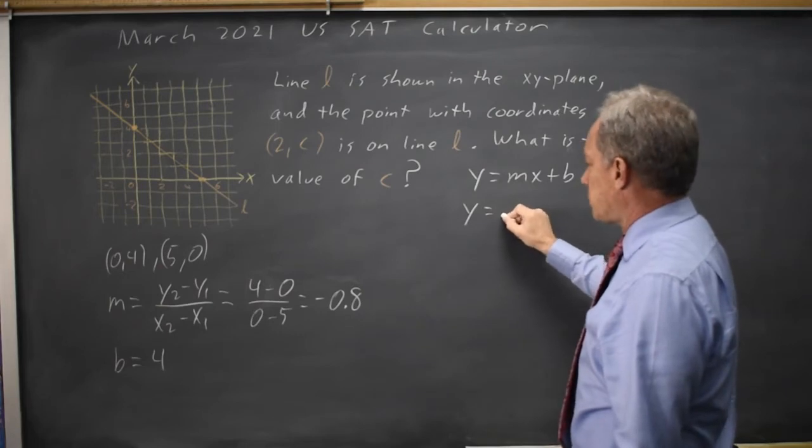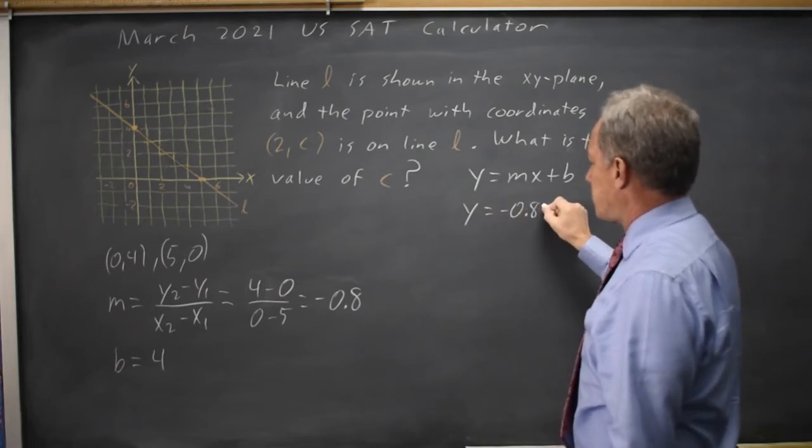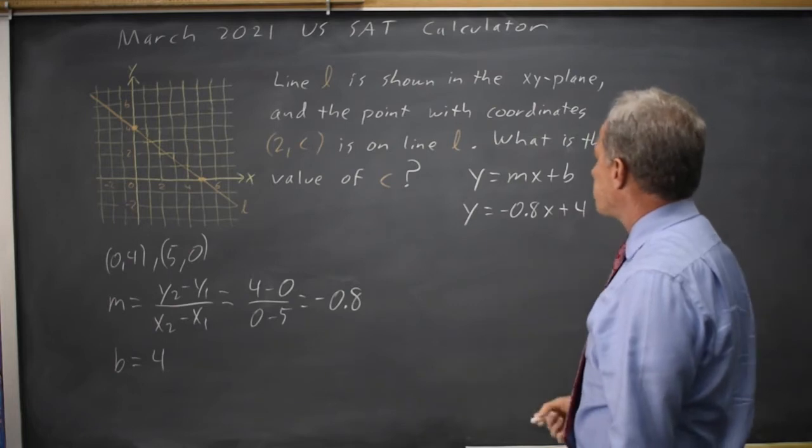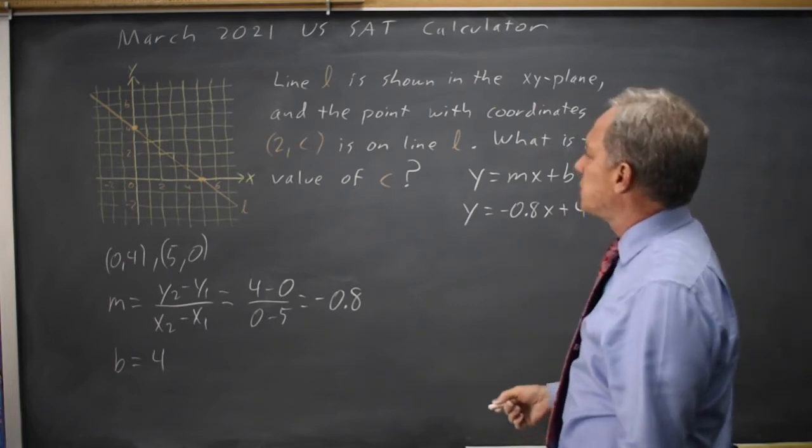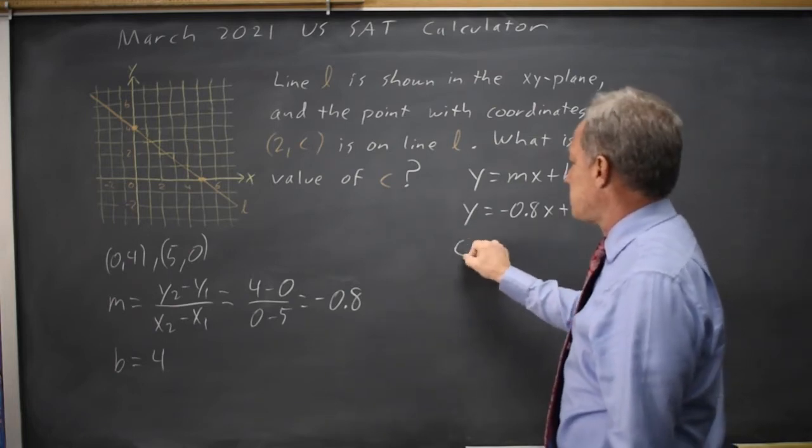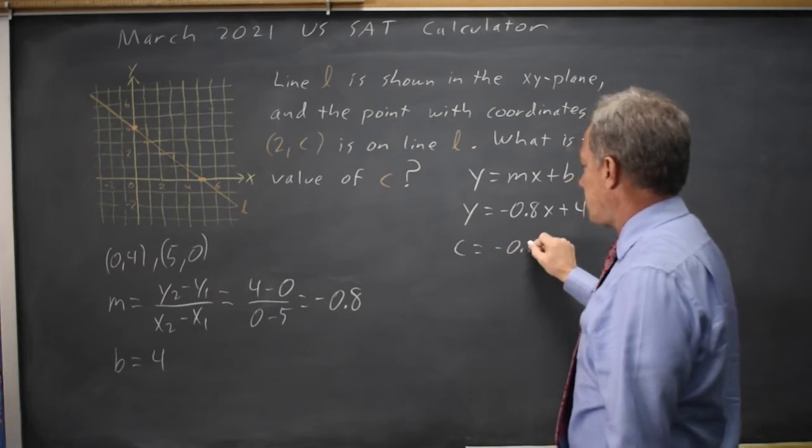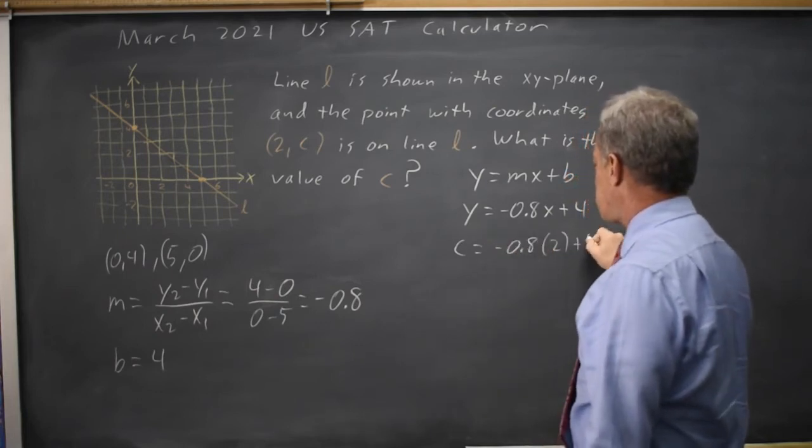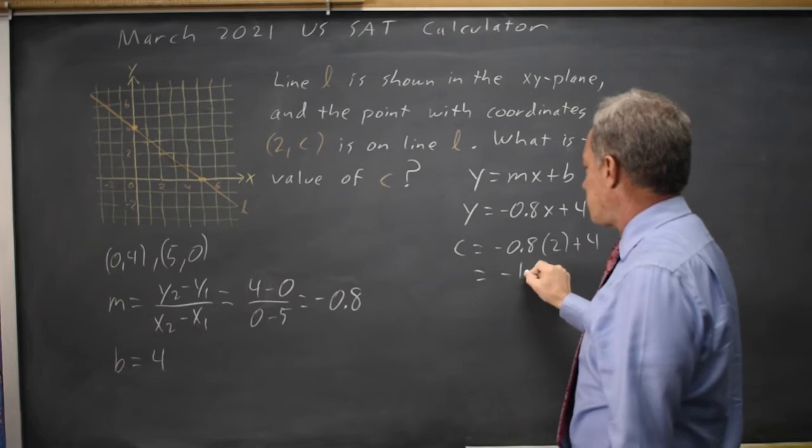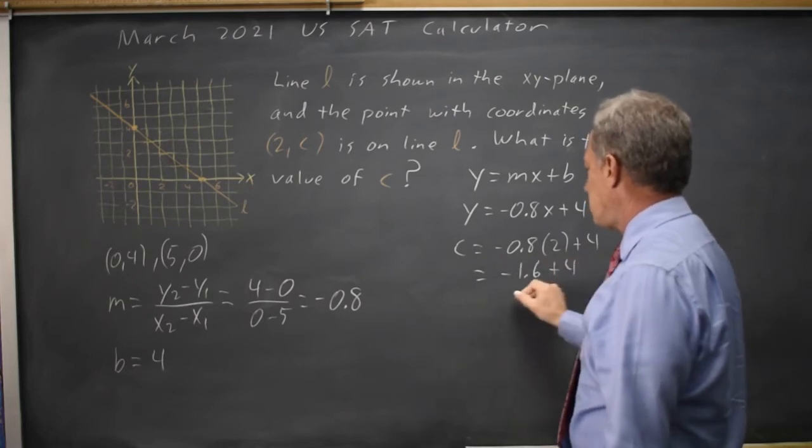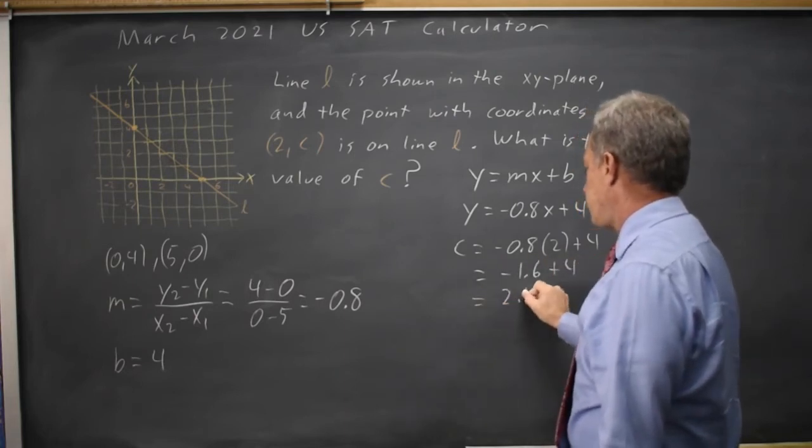m is negative 0.8, so negative 0.8x plus b which is 4. And if I substitute in 2 for x I'll get c is negative 0.8 times 2 plus 4 which is negative 1.6 plus 4 which is 2.4.